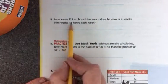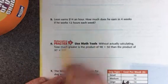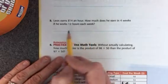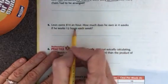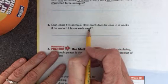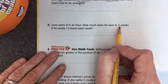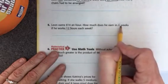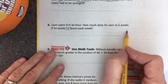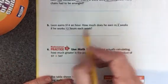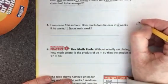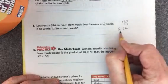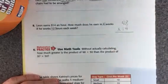Let's look at number 5. Leon earns $14 an hour. How much does he earn in 4 weeks if he works 12 hours each week? What I'm going to need to do first, I need to find out how many hours he's working. Well, he works for 4 weeks and 12 hours in each of those weeks. So I need to multiply 12 times 4 first to find out how many hours he worked in all. Well, 4 times 12 is 48, so I'll write this over here to the side. And now I'll multiply by the 14 hours to see how much money he earned during that time.